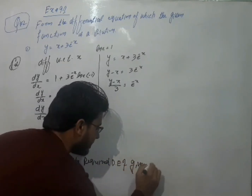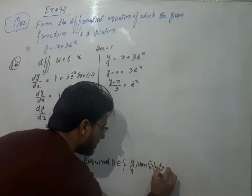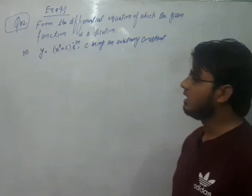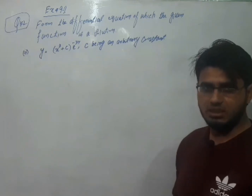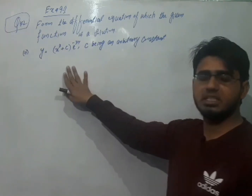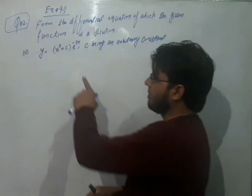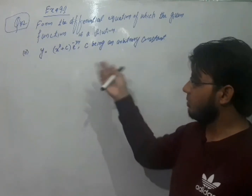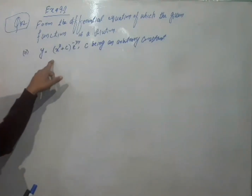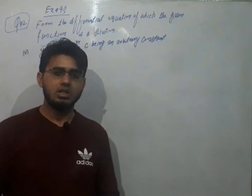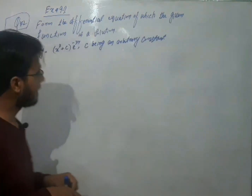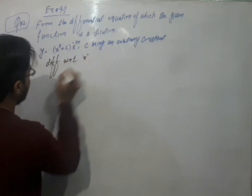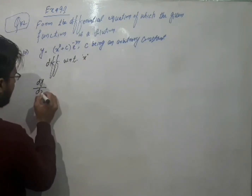Second part: y = x³ + c·e^(−3x), c being an arbitrary constant. यहाँ एक arbitrary constant है, इसका मतलब first order differential equation बनेगी. पहला derivative लेते हैं — यहाँ x³ और c·e^(−3x) दो functions का product है, इसलिए product rule use करेंगे. dy/dx = x³ · d/dx(e^(−3x)) + e^(−3x) · d/dx(x³).